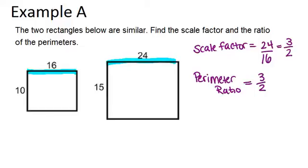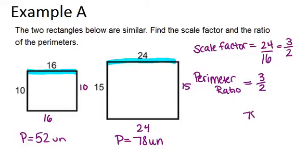We could check this by actually figuring out the perimeters of each and dividing them to see if the ratio reduces to 3 over 2. In the smaller rectangle, I'm just adding in the other sides. The perimeter would be 10 plus 16 plus 10 plus 16, which is 52. For the larger rectangle, we add up all four sides and get 78. So the perimeter ratio is 78 over 52, which does reduce to 3 halves.